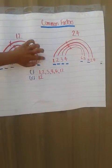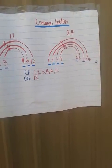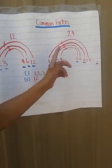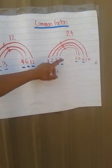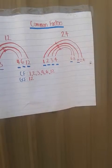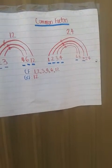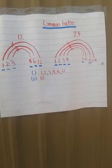For 24 it's the same thing. 1 times 24 is 24, 2 times 12 is 24, 3 times 8 is 24, and 4 times 6 is 24. Then I underlined all the common factors.